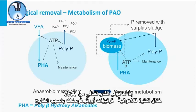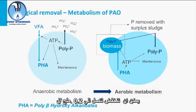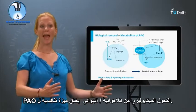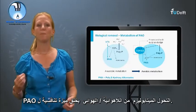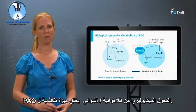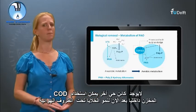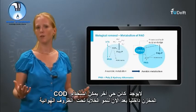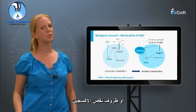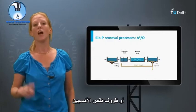If enough VFA is available during the anaerobic period, effluent orthophosphate concentrations as low as 0.2 mg P per liter can be reached. Switching between anaerobic and aerobic metabolism creates a competitive advantage for PAO, as no other organism can use the internally stored COD anymore for cell growth under aerobic or anoxic circumstances.